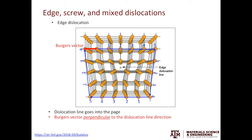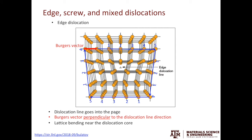Notice the Burgers vector is perpendicular to the dislocation line direction. Also, near the dislocation core, you can see lattice bending, which tells us there is elastic strain stored near the core. If you look at the gliding of the dislocation, the dislocation line glides such that the gliding direction is parallel to the Burgers vector.